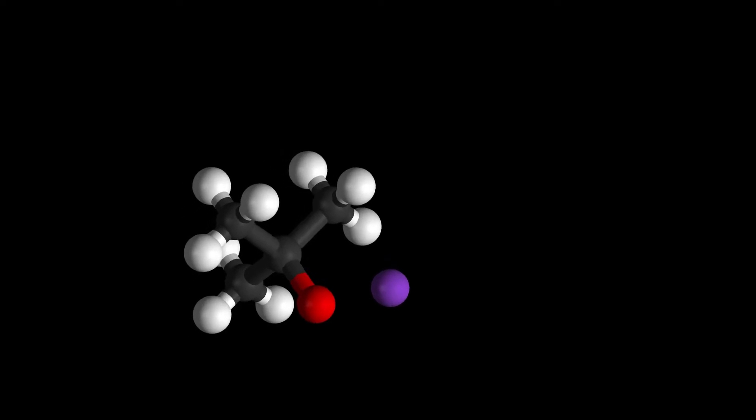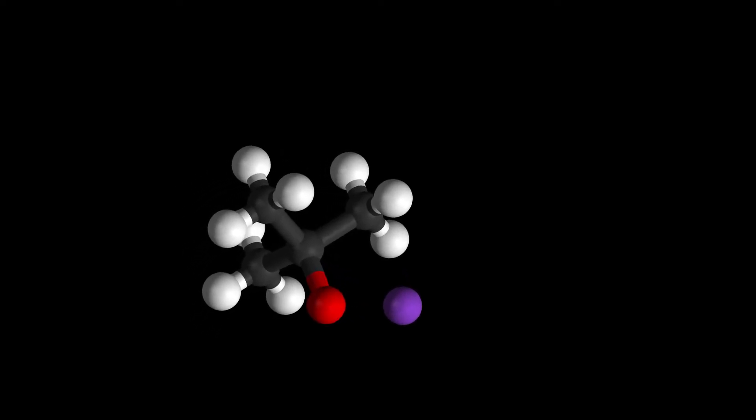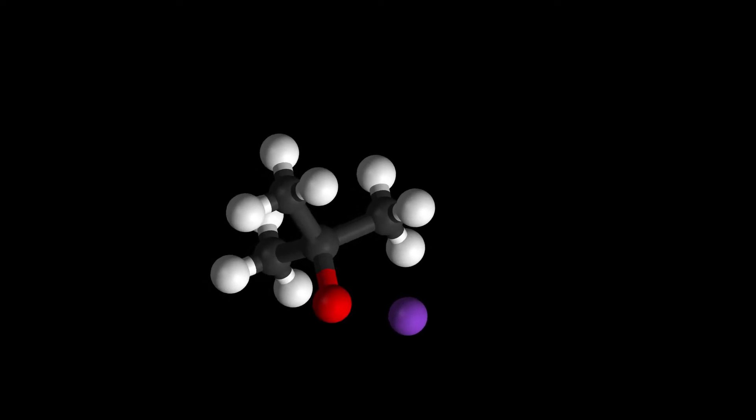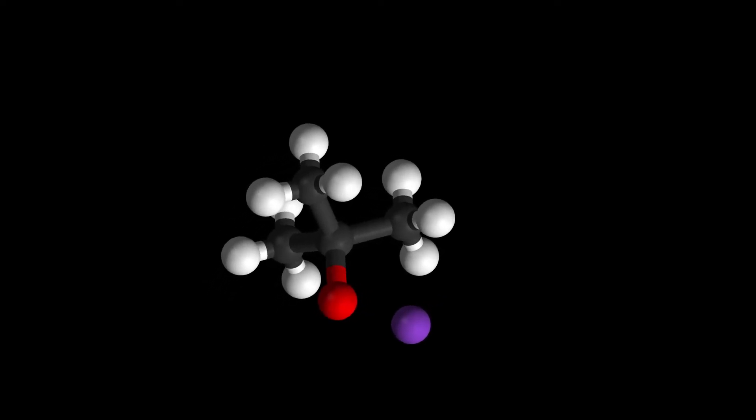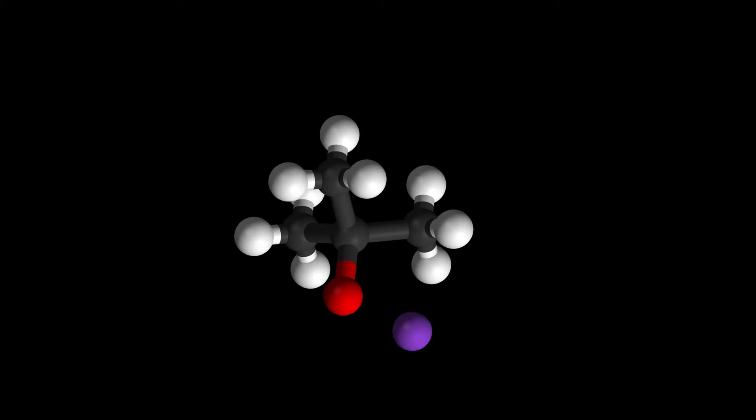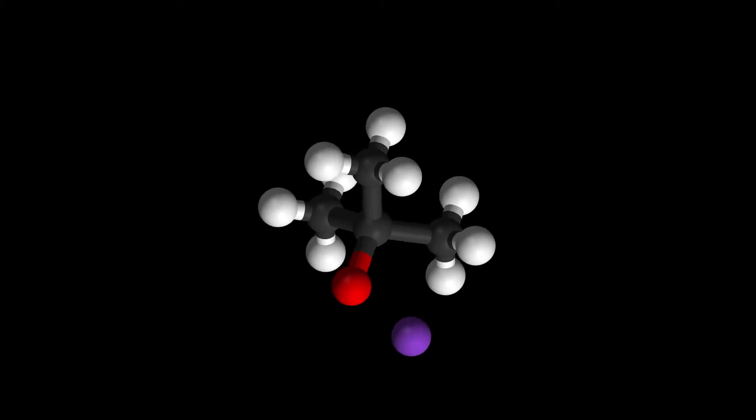Elemental potassium is a soft silvery white alkali metal that oxidizes rapidly in air and reacts vigorously with water, generating sufficient heat to ignite hydrogen emitted in the reaction and burning with a lilac-colored flame.